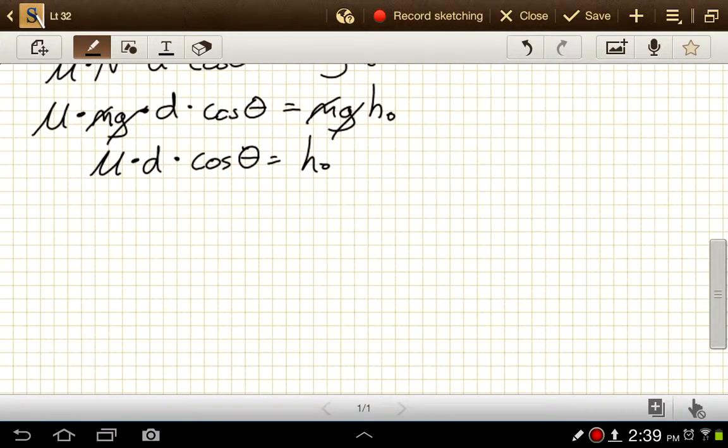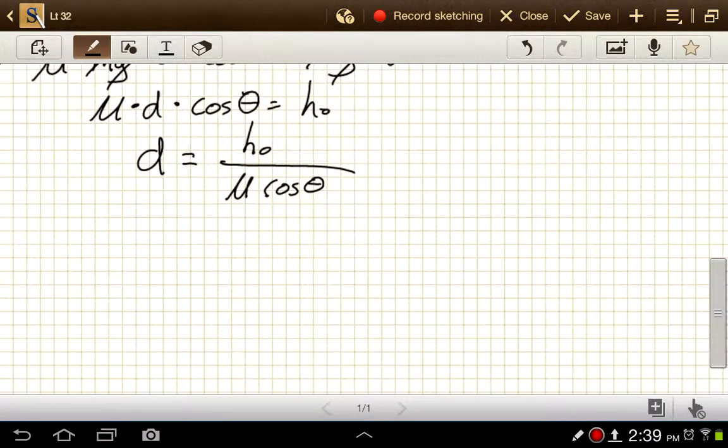So I'm left just with mu times d times cosine theta is equal to h naught. And then to get d all by itself, I'll divide both sides by mu cosine theta. So d is h naught over mu cosine theta. Now I can plug in numbers and I've simplified this quite a bit.